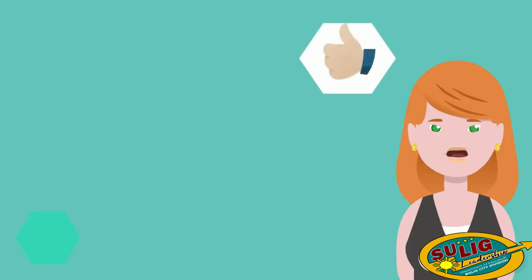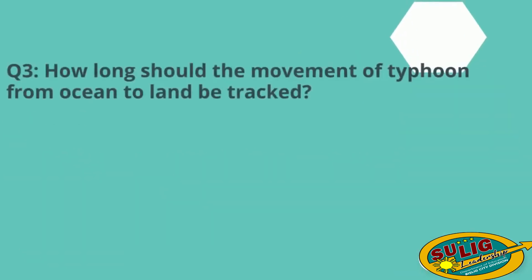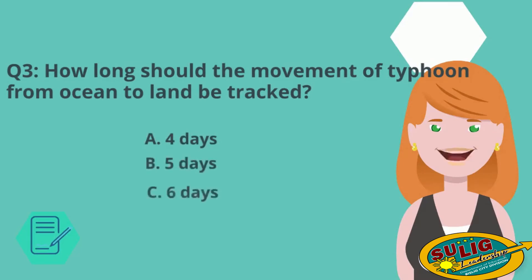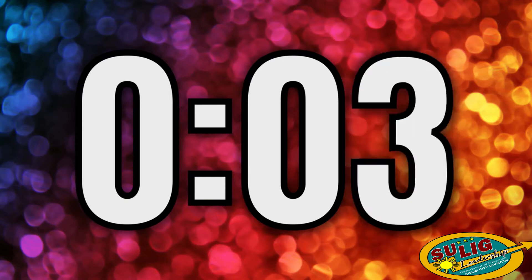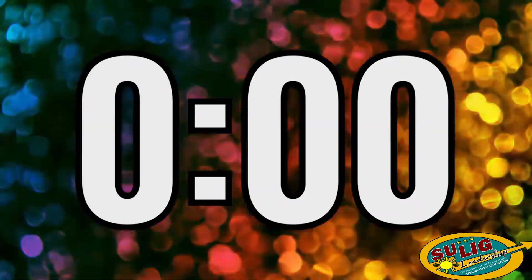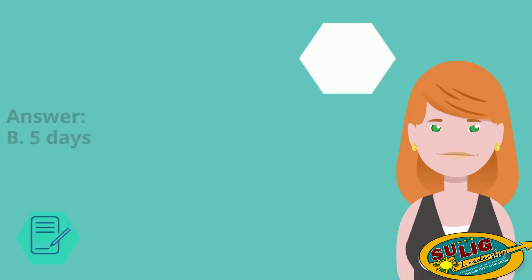The correct answer is letter D — Philippine Atmospheric Geophysical and Astronomical Services Administration. And finally, for question number three: How long should the movement of a typhoon from ocean to land be tracked? A. 4 days. B. 5 days. C. 6 days. D. 7 days. The correct answer is letter B — 5 days.